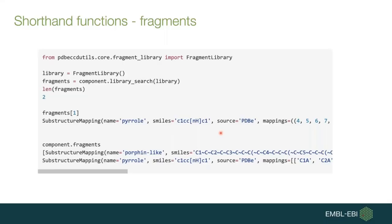Another function is for locating fragments. Start by importing the FragmentLibrary class and creating an instance. If you don't provide any parameter, the fragment library supplied with the code is used. However, you can replace it with your own fragment library. Then simply run library_search with the library, and you can see that two different fragments were located in the component of interest. All fragments are defined by their name, their SMILES representation, and atomic mapping on the component of interest.